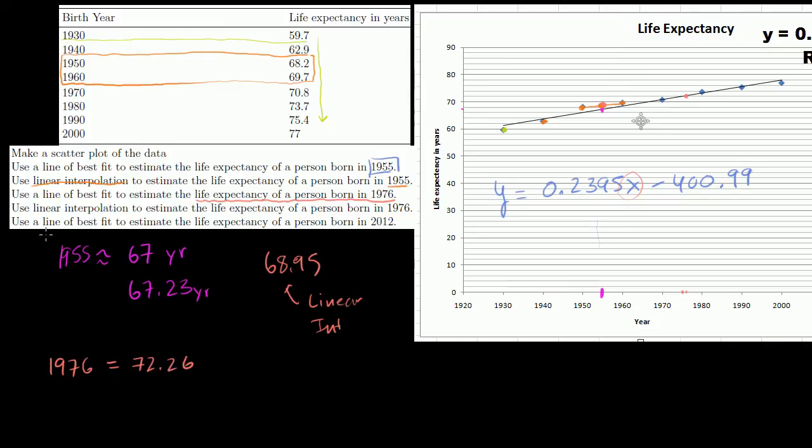Let me make this clear here. These columns, this one right here is line of best fit, and this right here is interpolation. Now, they want us to use linear interpolation to estimate the life expectancy of a person born in 1976. So what they want us to do is draw a line between these two points and then use that line, not the whole line of best fit, to figure out what 1976 might have been.